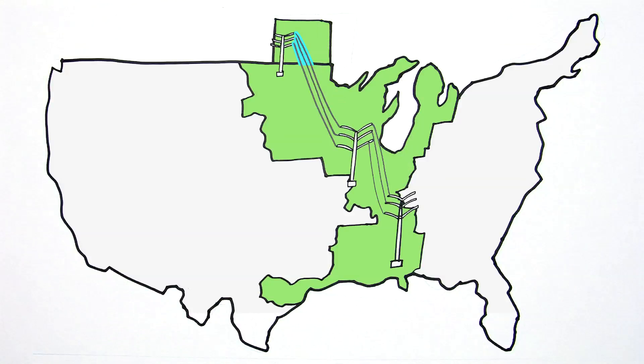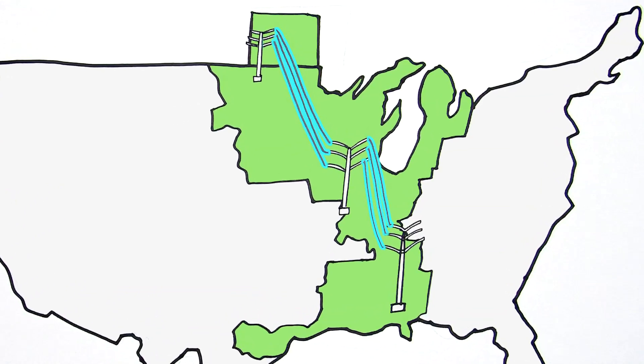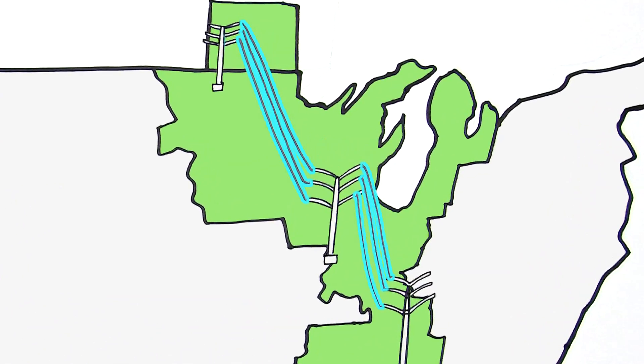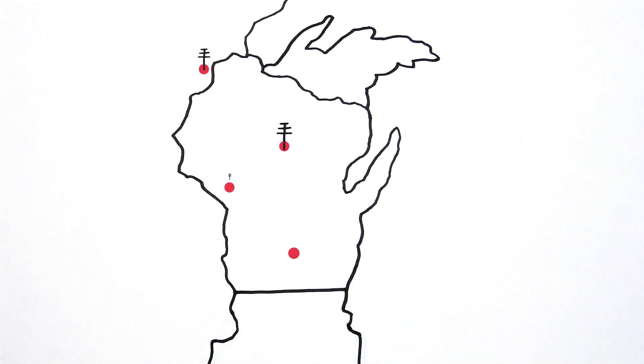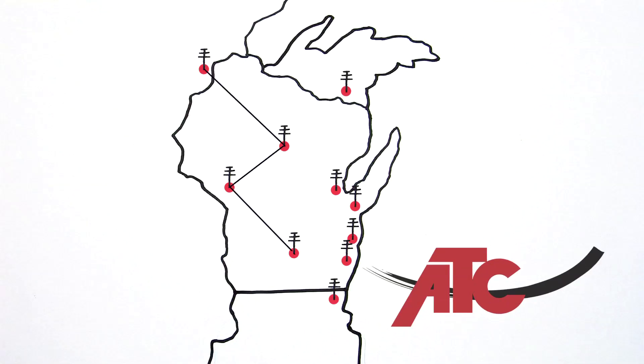The grid also is part of our nation's critical infrastructure. Like our interstate highway system, it doesn't start or stop at state borders. In Wisconsin, the Upper Peninsula of Michigan, and portions of Minnesota and Illinois, American Transmission Company owns, operates, and maintains the grid.